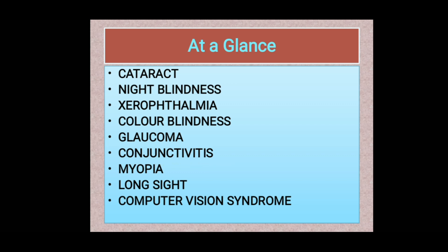The conjunctiva is a layer seen near the cornea, attached to the upper and lower eyelids, covering the front part of the eye except the cornea. It is a mucus transparent membrane. A disease related to the conjunctiva is conjunctivitis. We will also discuss myopia, long sight, and computer vision syndrome.